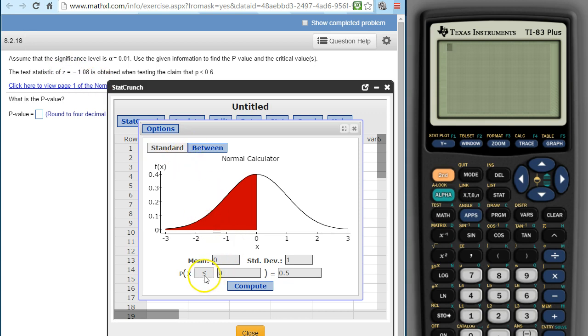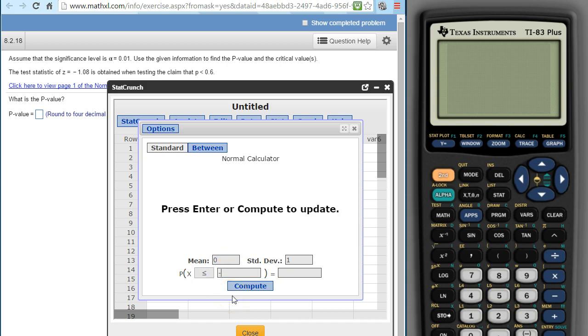So what I need to do is, down here, I want to pick the mean zero, standard deviation to one, and then the test statistic is negative 1.08, and I want to find the probability.